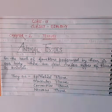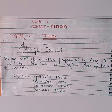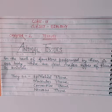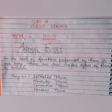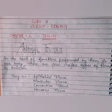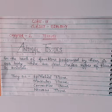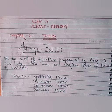Hello students, today we are going to discuss the topic animal tissue from chapter 2 of class 9th biology. As you know, the tissues in plants and animals are different because the needs of a plant's body and an animal's body are different. That's why plant tissue and animal tissue are different.